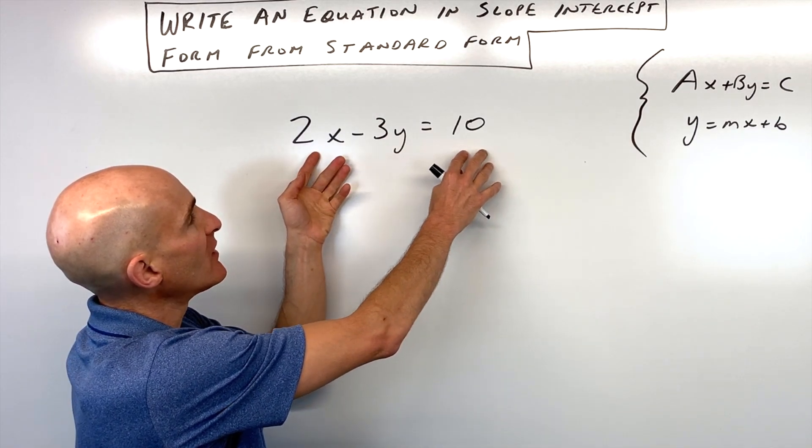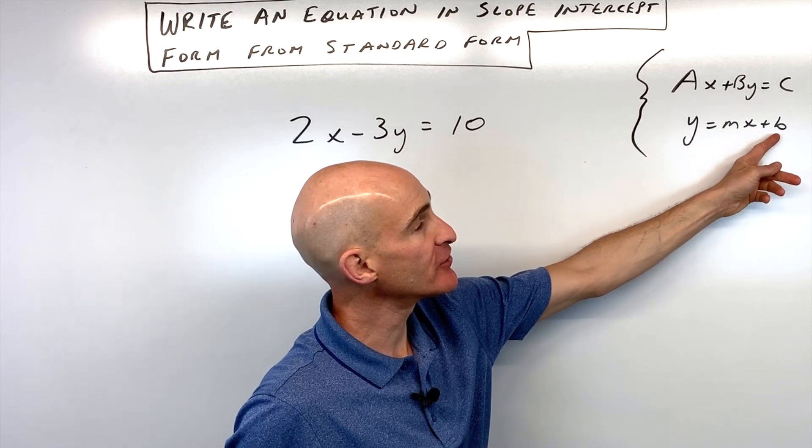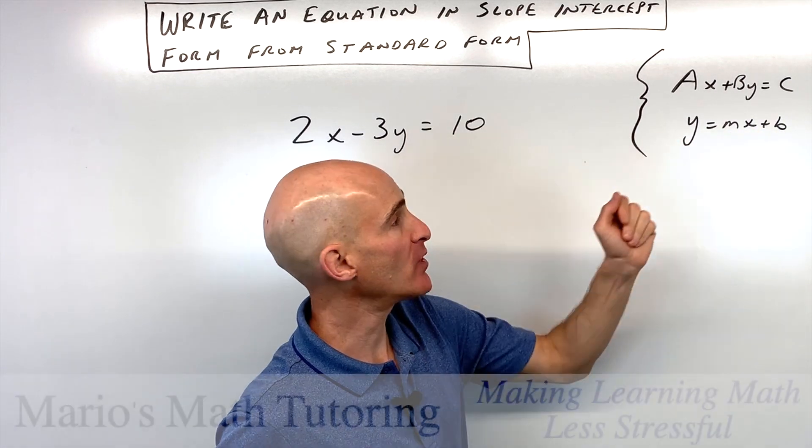So we're given this equation of a line in standard form, but we want to convert it into the slope intercept form, the y equals mx plus b form of the equation of a line.